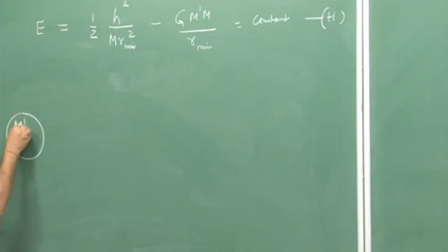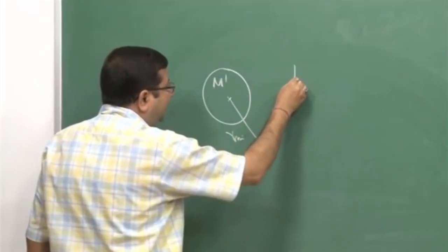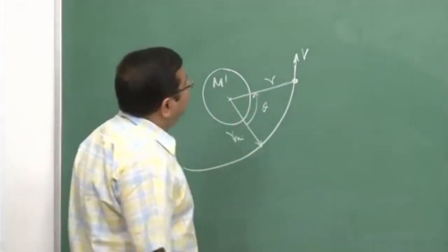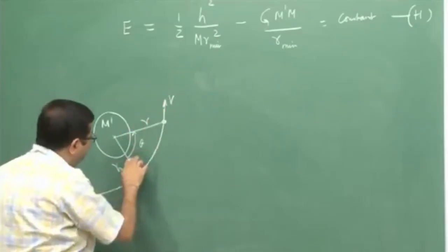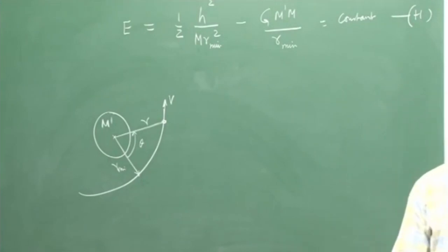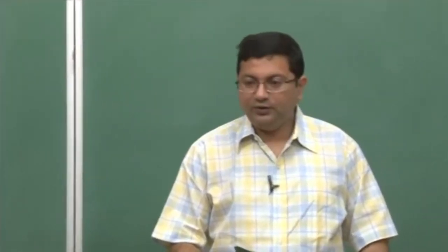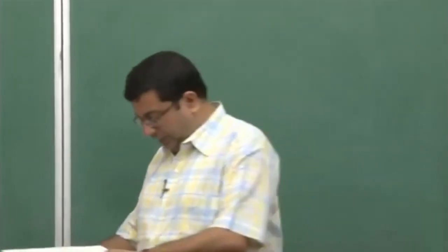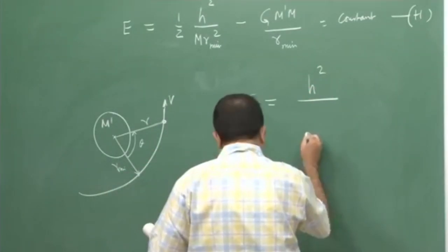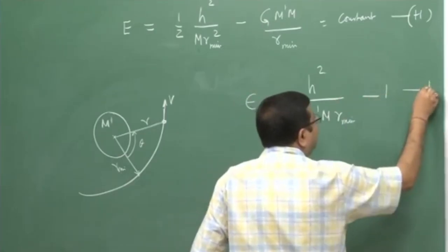So, this is the velocity. This is the minimum point r-min. The vehicle is somewhere here moving with a velocity v. This is r and this is theta. Earlier we had derived an expression for conic sections and showed that the eccentricity epsilon is given as: h-squared upon G M-dash r, upon r-min, minus 1. We called this equation D.